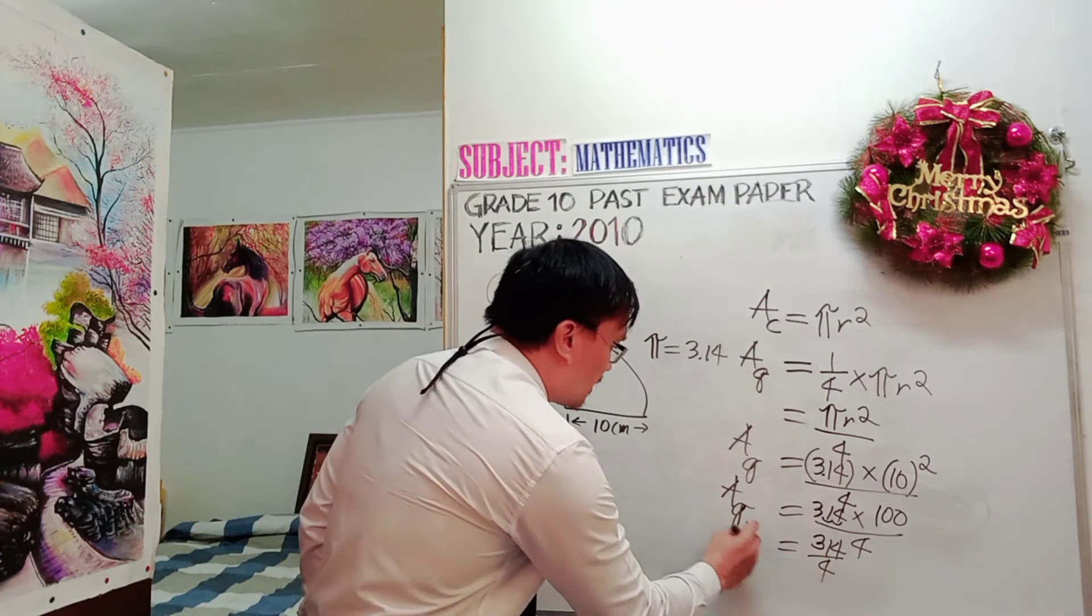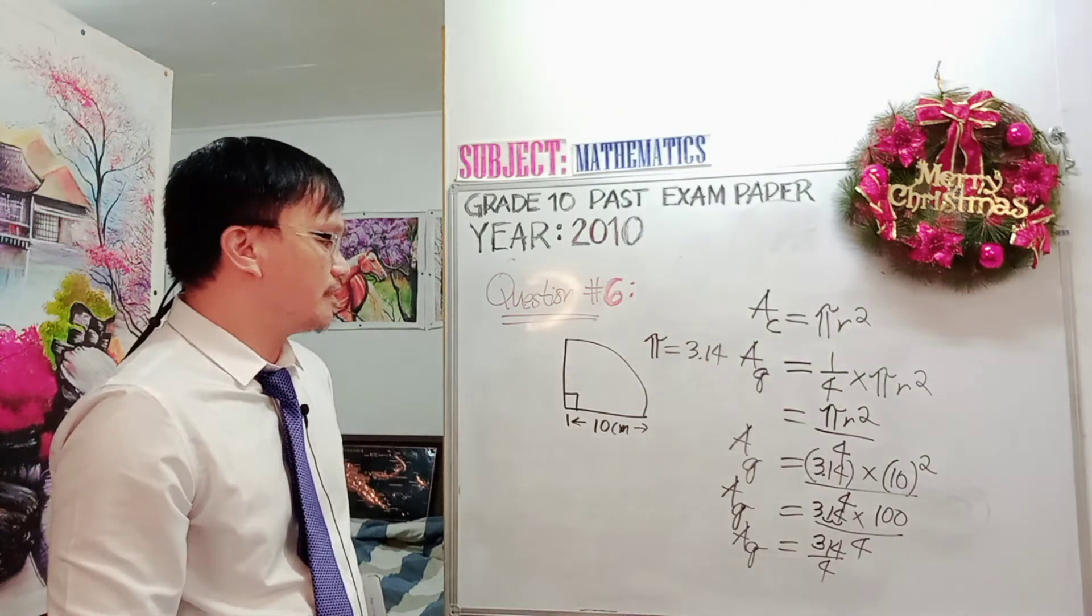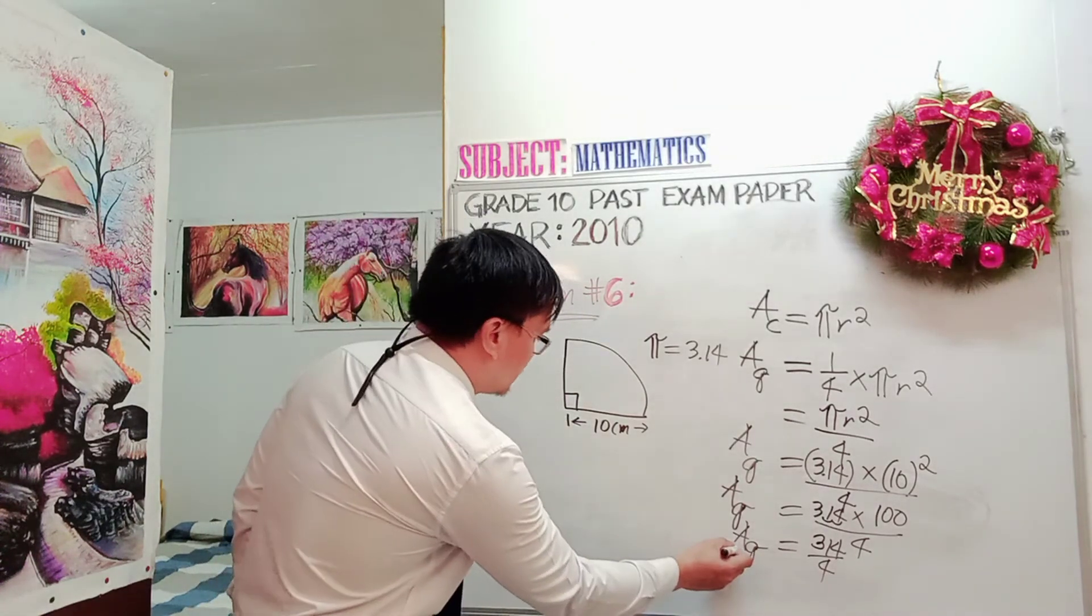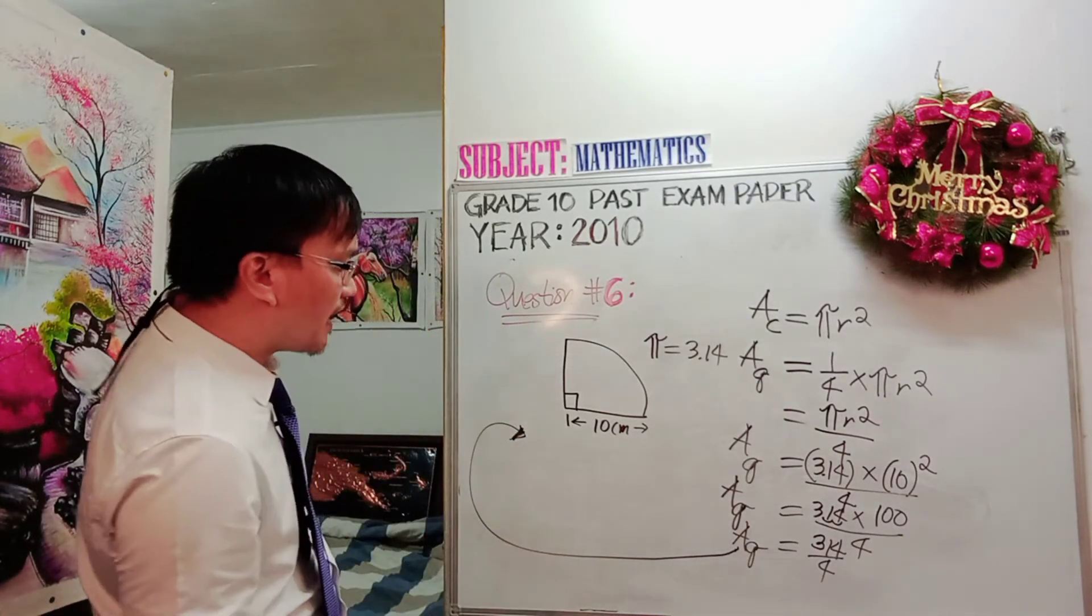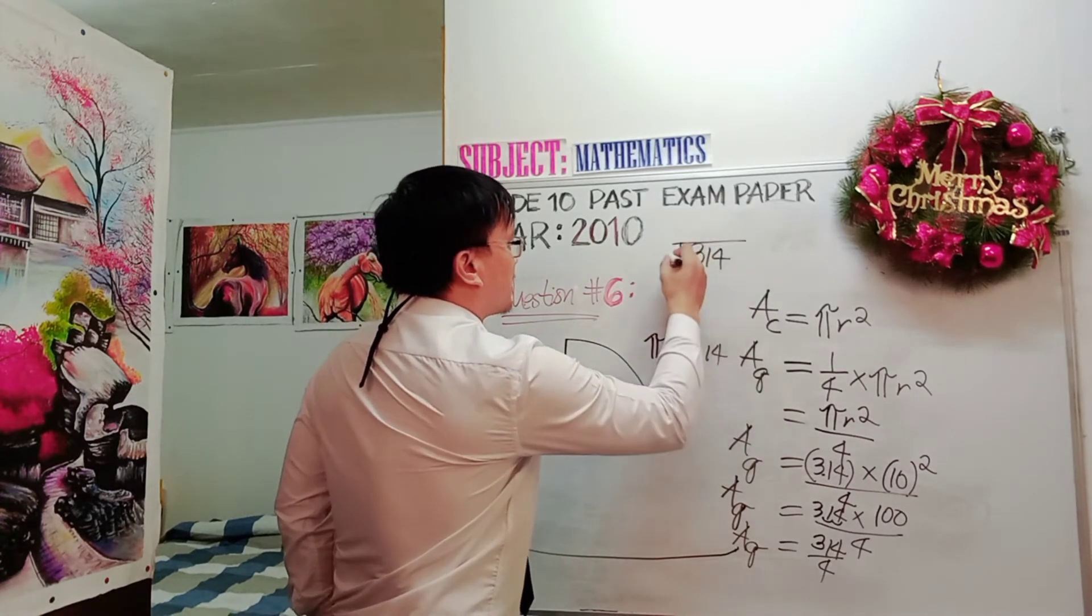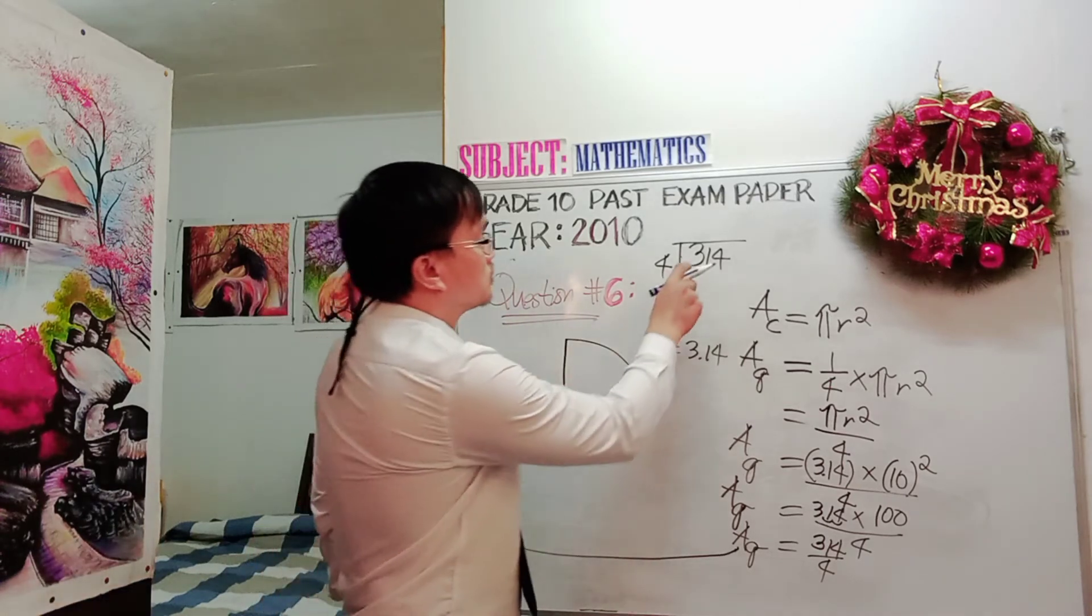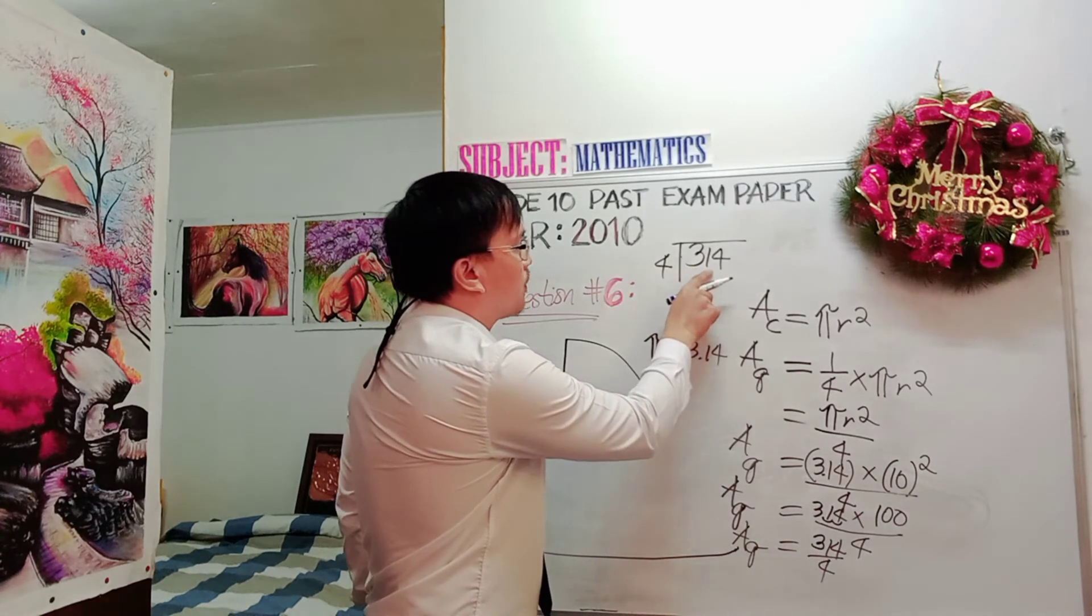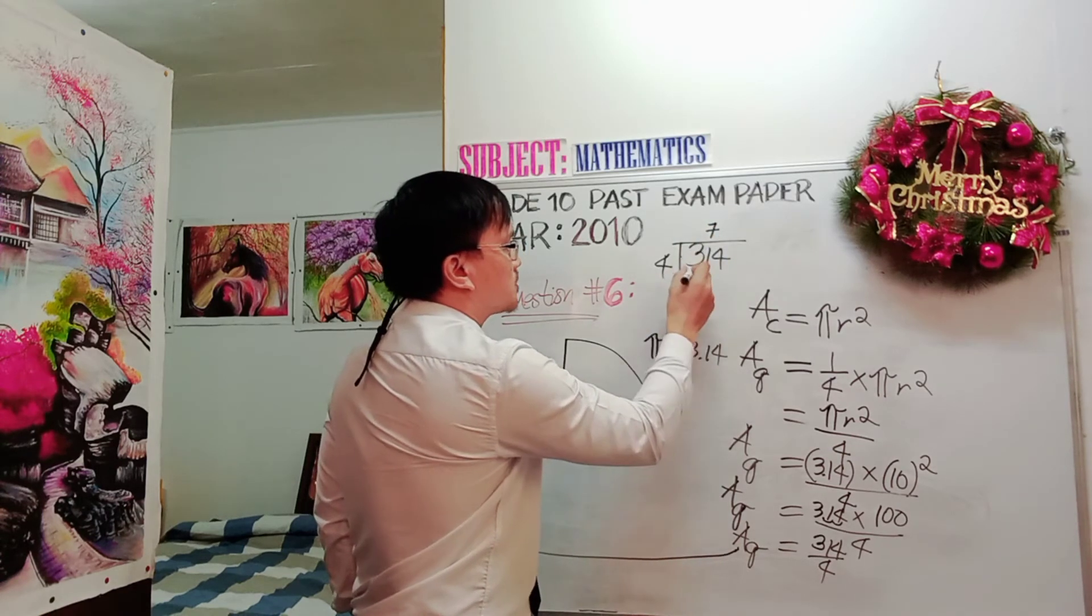So this is now 314 divided by 4. The area of the quadrant is 314 divided by 4. Let's come this way. So we can divide 314 divided by 4. 3 divided by 4 cannot be, so we have to continue 31. 31 divided by 4 is 7. 7 times 4 is 28.